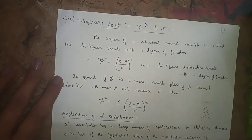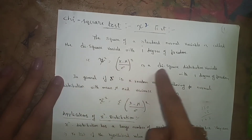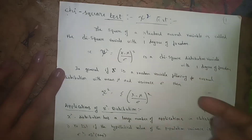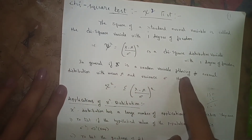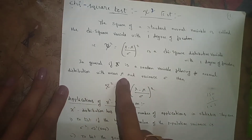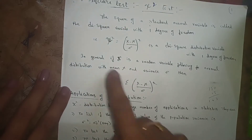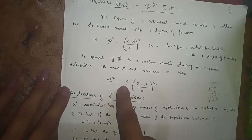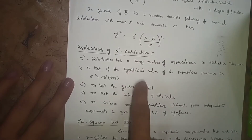Therefore, chi-square is equal to (x minus mu by sigma) whole square, and this is a chi-square distribution variate with one degree of freedom. In general, if x is a random variable following the normal distribution with mean mu and variance sigma, then chi-square is equal to sigma of (x minus mu by sigma) whole square.